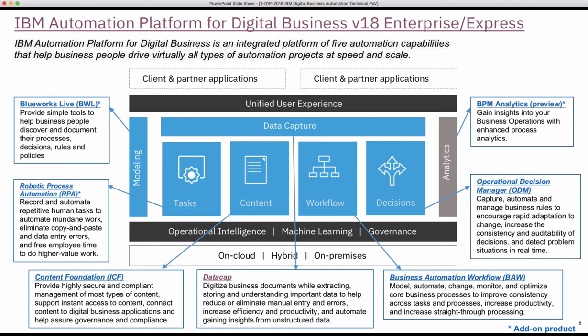If you've seen my previous videos, you've seen many of these products that make up the platform. What I wanted to do today was take the time to explain how these products fit together to address the larger business automation challenges that businesses face today. As you can see in this cake chart, business process automation often requires a variety of capabilities and patterns, and putting these together gives you more power to address a larger set of automation challenges.